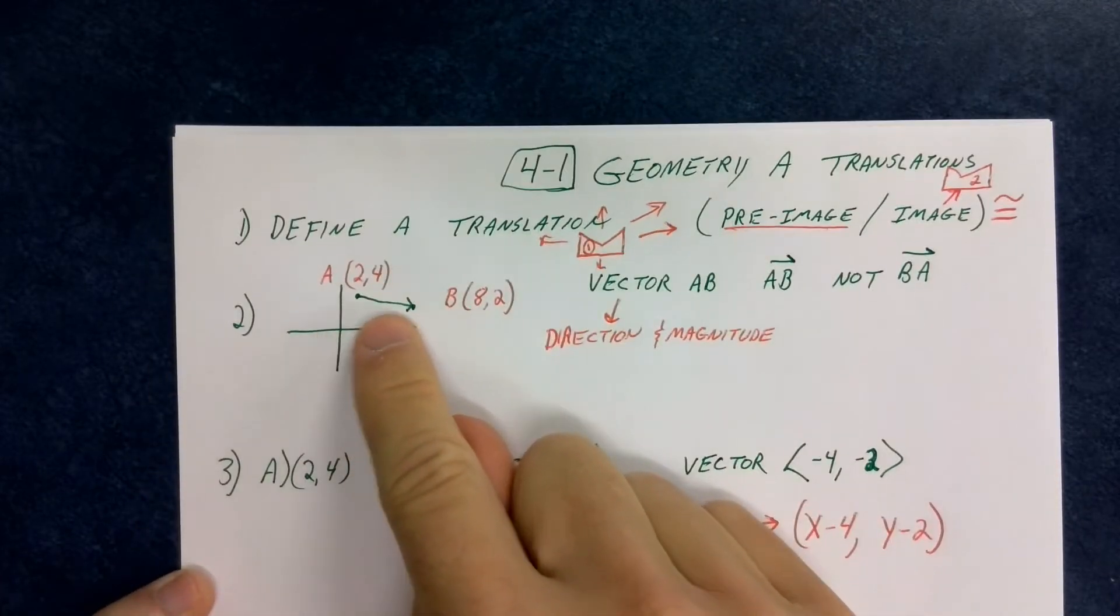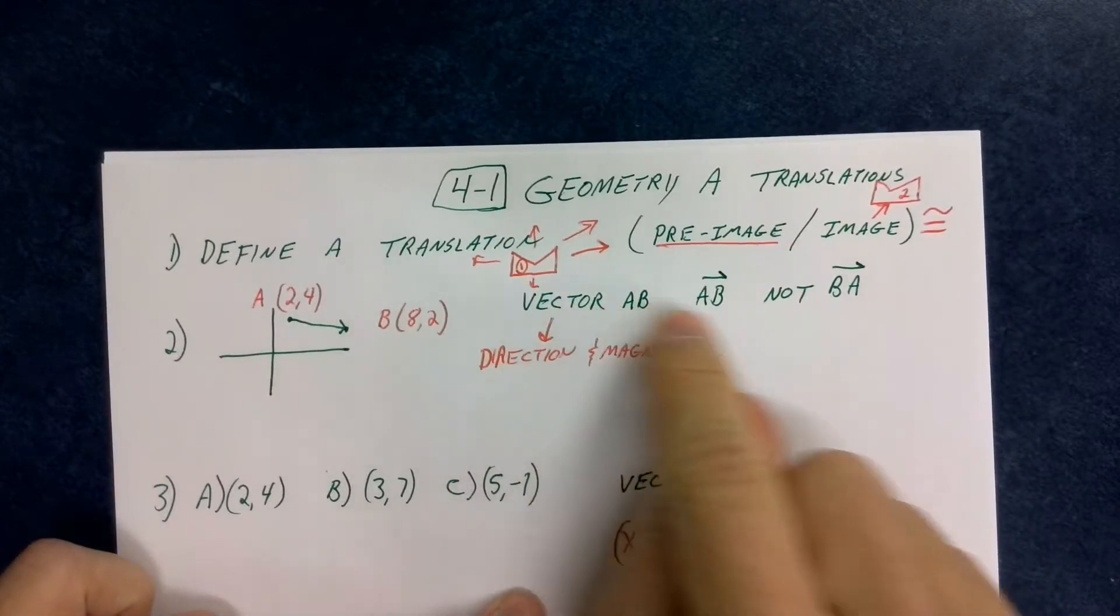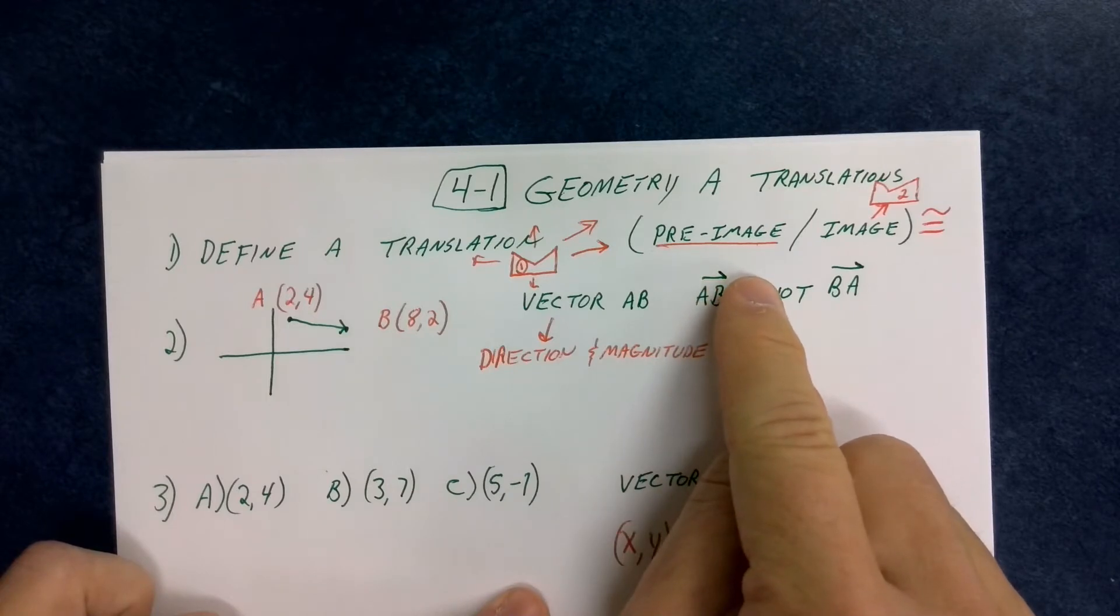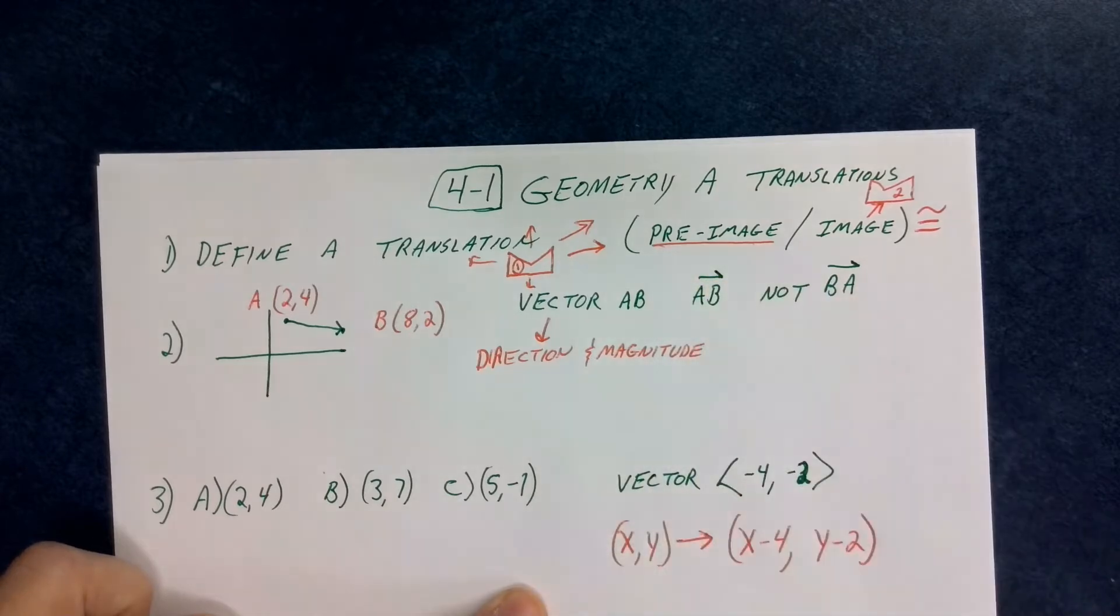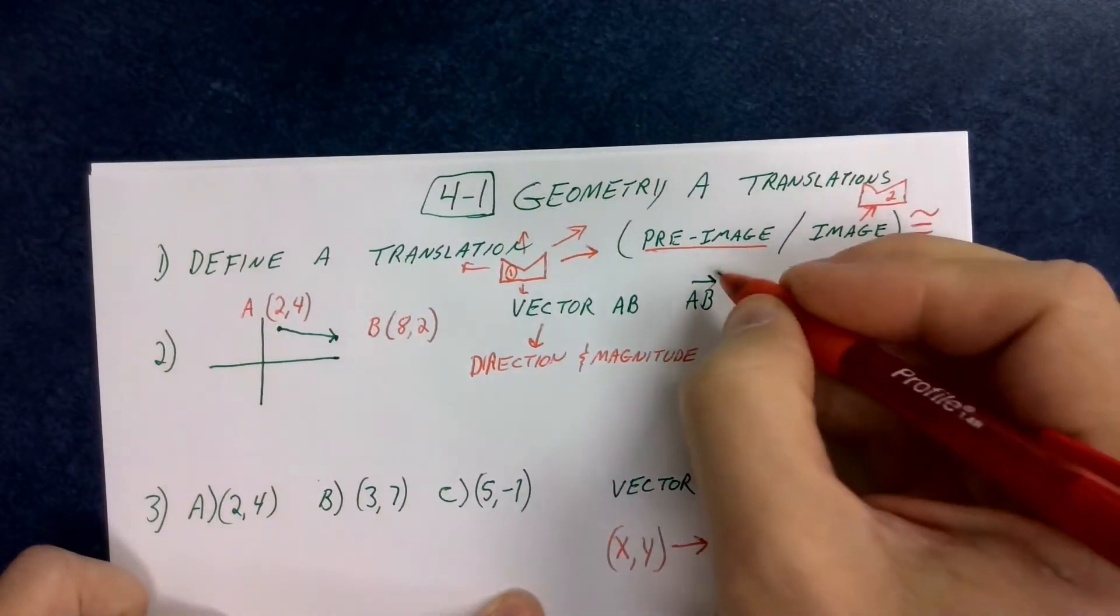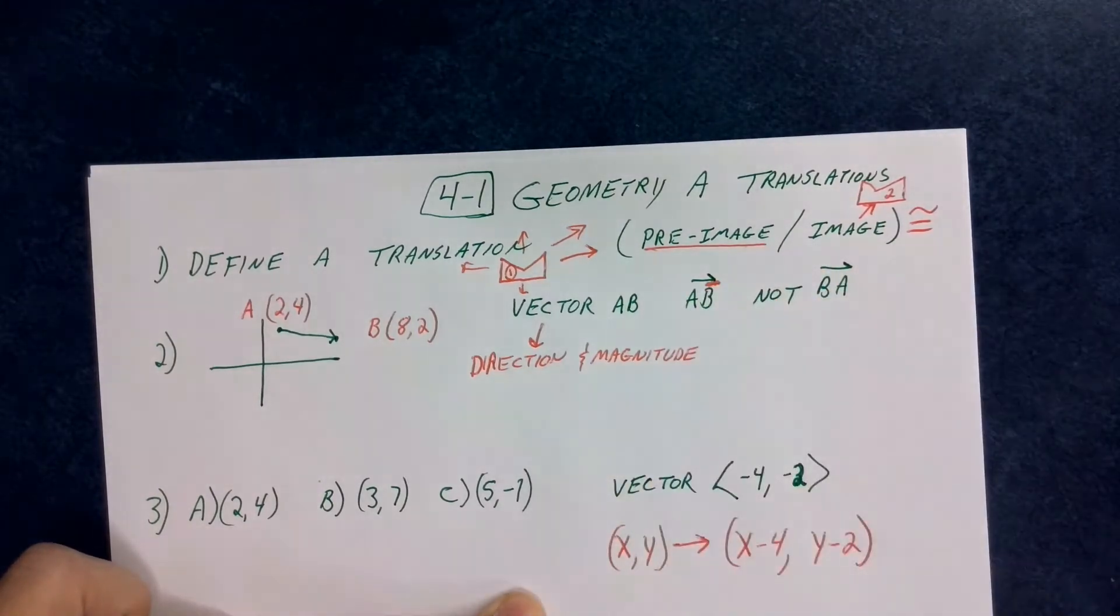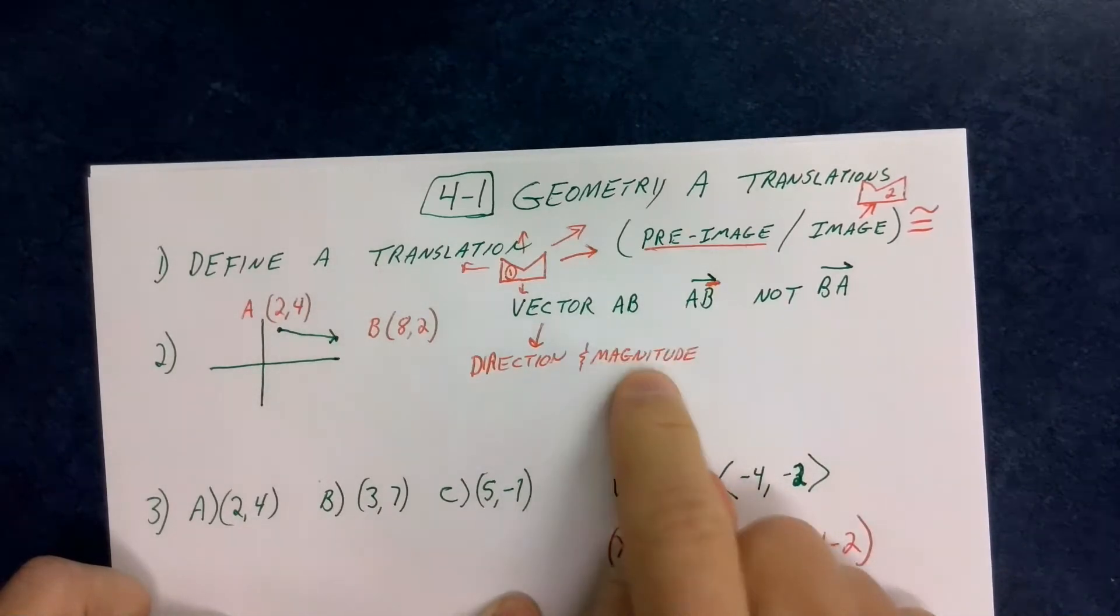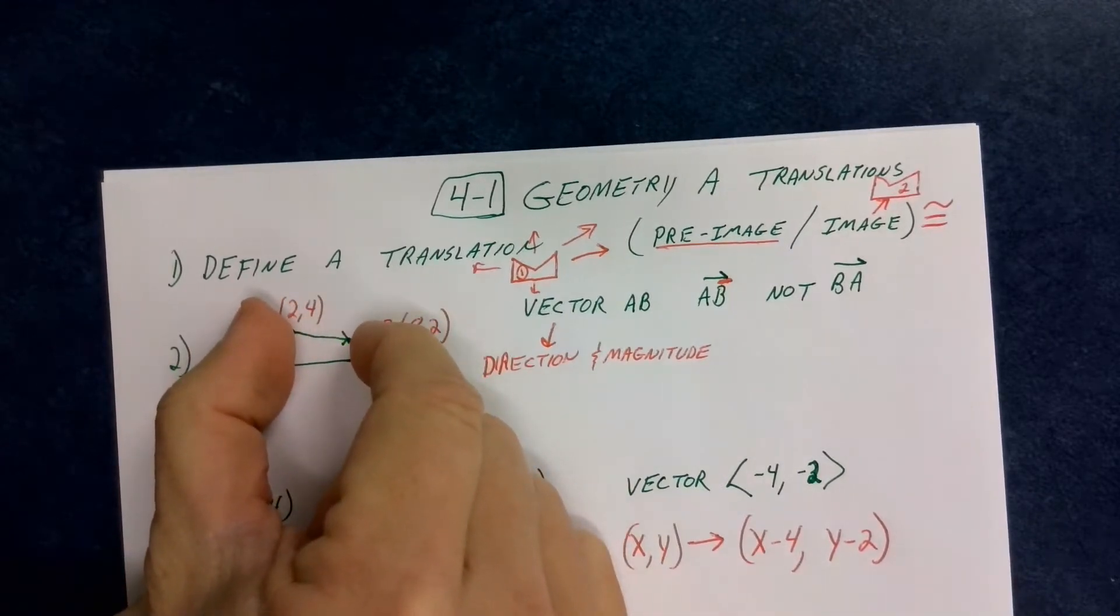So this one goes from 2,4, all the way to 8,2, and we would call this vector AB. The notation is, it looks just like this, so it's got a segment-like mark, except it's only got an arrowhead that goes at the top. If we put the full little connector down here, this little bottom part, if we were to put that red on it like that, that would be considered a ray.